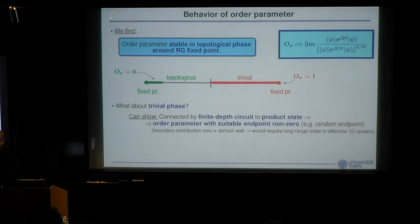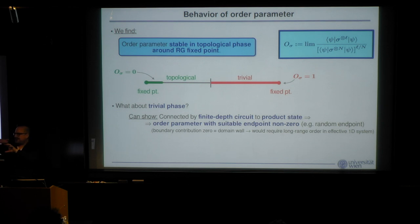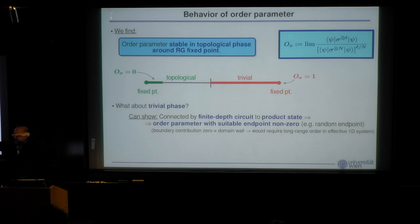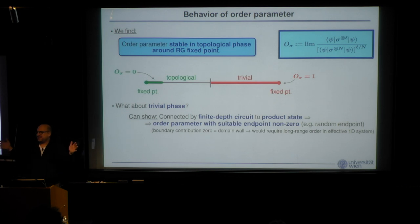Regarding the Z2 symmetry: any physical perturbation preserves it because adding a finite-depth quantum circuit corresponds to applying an MPO layer, which doesn't touch the virtual legs — the symmetry is preserved. To do this cleanly, one should keep the bond dimension fixed by writing the circuit as something starting at the identity, so the sector labeling stays consistent and the continuity argument for eigenvalues works properly.